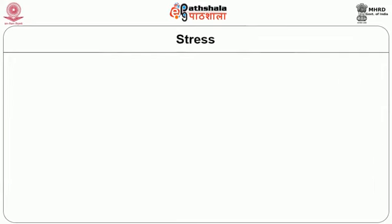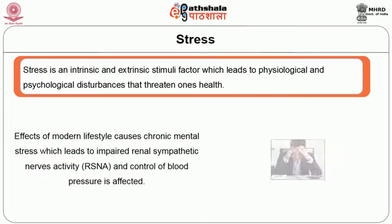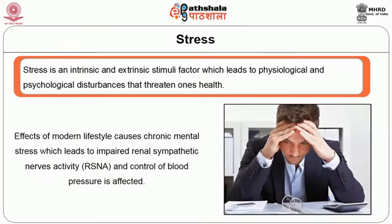Stress is the next factor. Stress is an intrinsic and extrinsic stimuli factor which leads to physiological and psychological disturbances that threaten one's health. Effects of modern lifestyle cause chronic mental stress, which leads to impaired renal sympathetic nerve activity and control of blood pressure is affected.